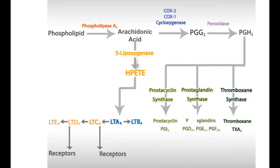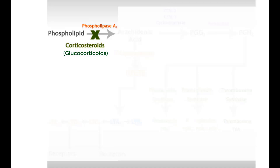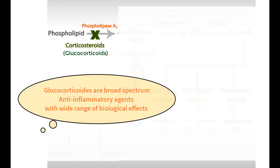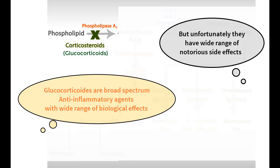Starting from the early step in the eicosanoid production pathway, corticosteroids — specifically the glucocorticoids — interfere with the phospholipase A2 enzyme, therefore interfering with the production of almost all types of inflammatory eicosanoids. Indeed, glucocorticoids are a broad spectrum of anti-inflammatory agents with a wide range of biological effects, but unfortunately they have a wide range of notorious side effects.